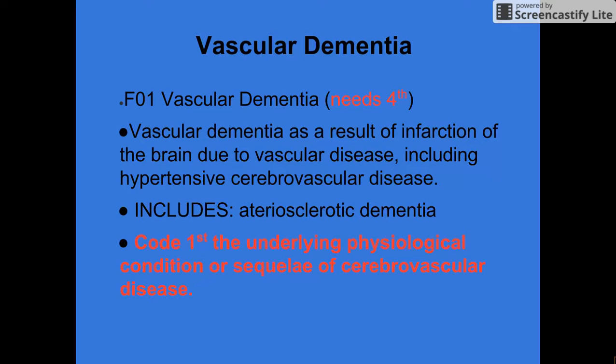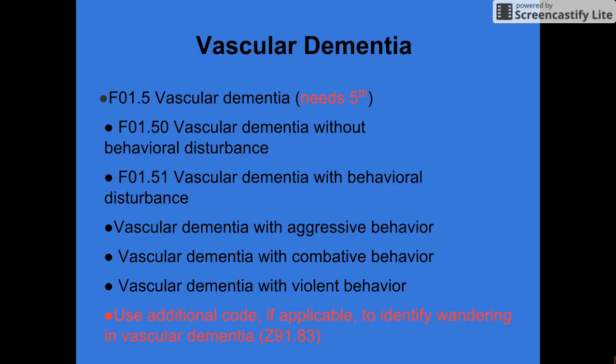Vascular dementia is coded as F01 and does need a fourth character. It does include arteriosclerotic dementia. You first code the underlying physiological condition or the after effects of the cerebrovascular disease. The following are the different codings. Please remember that if you have patients who have vascular dementia and they are wanderers, you must use Z91.83.